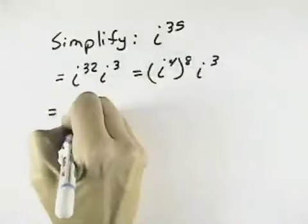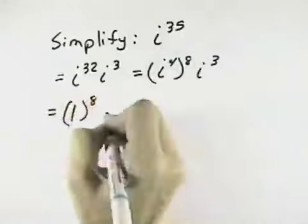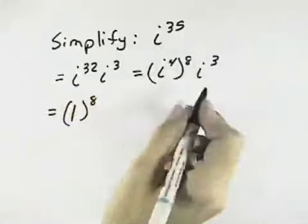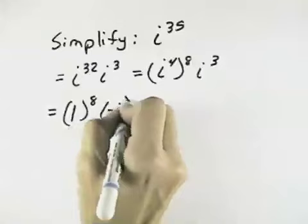And we know i to the 4th is 1, so we have 1 to the 8th times i cubed. i to the 3rd power is negative i.